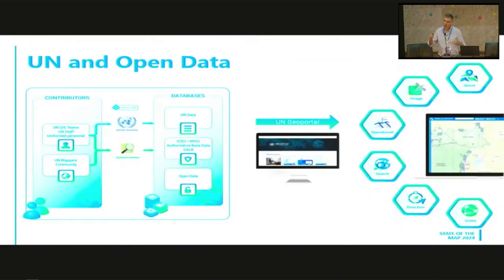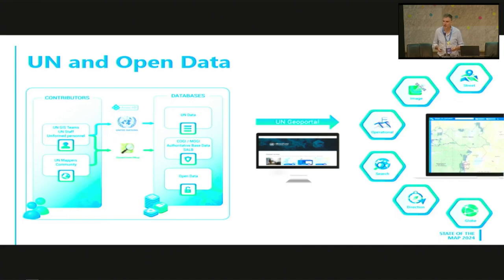This is how we operate: we work internally with UN personnel — both uniformed personnel and civilians — working together with the entire community through UN Mappers. We are using the HOT Task Manager in UN Mappers to coordinate activities. Internally, we are doing professional mapping and validation of the data, and then we combine all that data within our databases and produce all those services.